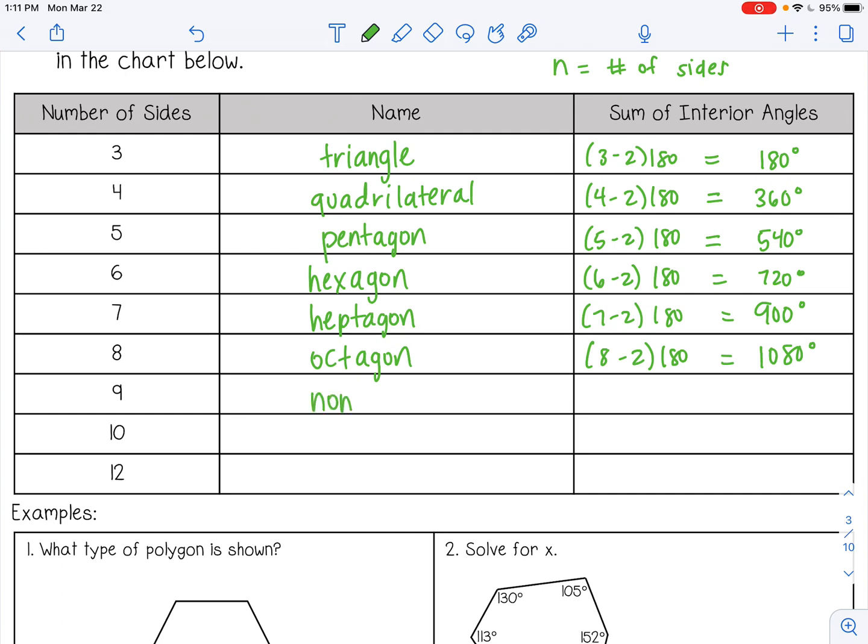Nine sides is a nonagon. That would be 1260. You should be seeing a pattern over here on the right. If you don't yet, I'll point it out in a second. A 10-sided polygon is a decagon. So 10 minus 2 times 180 is 1,440 degrees.